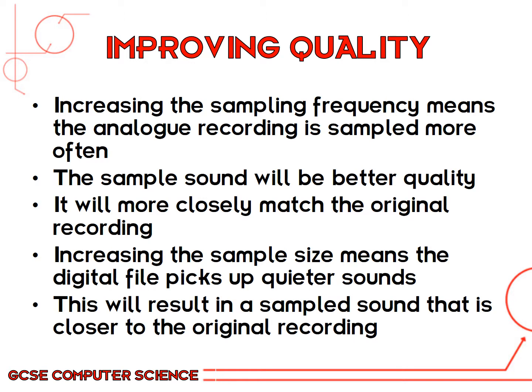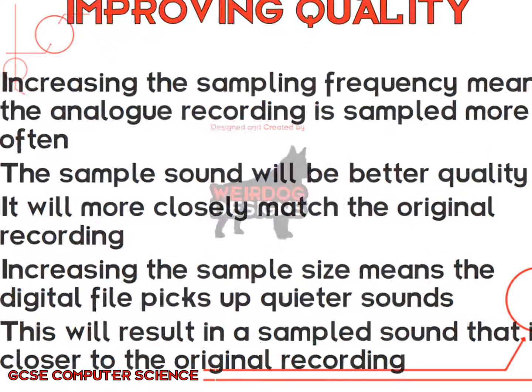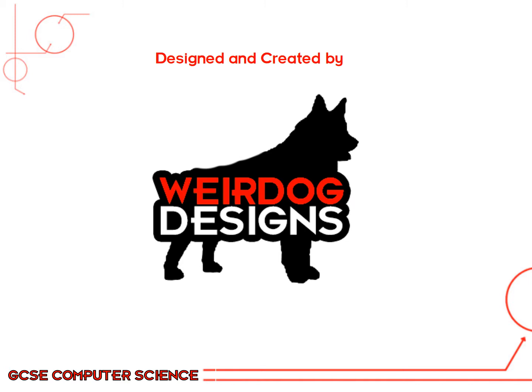In the exam you may be asked how to improve the quality of a sound file. To improve quality, you need to increase the sample frequency — the analog recording is sampled more often per second, the sampled sound will be better quality and closely match the original recording, and you may pick up quieter sounds, giving a result closer to the original. Thanks for watching this video — I hope you find it helpful. Please like and subscribe.